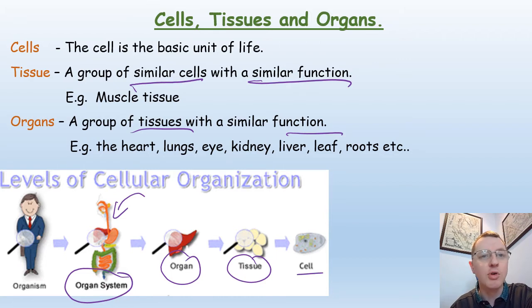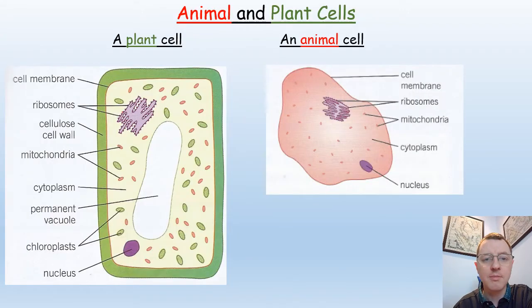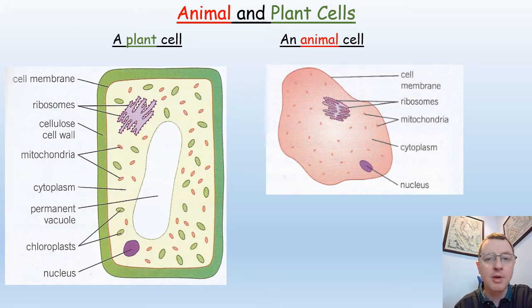This is also true in plants. Plants are also made up of organs, like the leaves, the roots, the stem, and flowers. But when we look at the cells, there are a number of similarities between animal cells and plant cells.